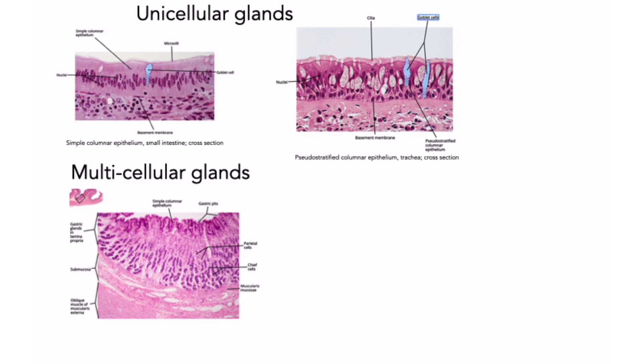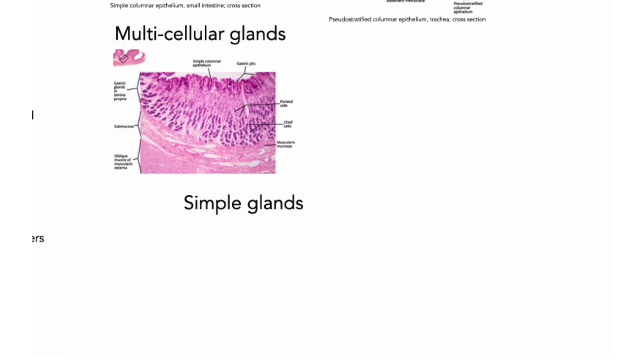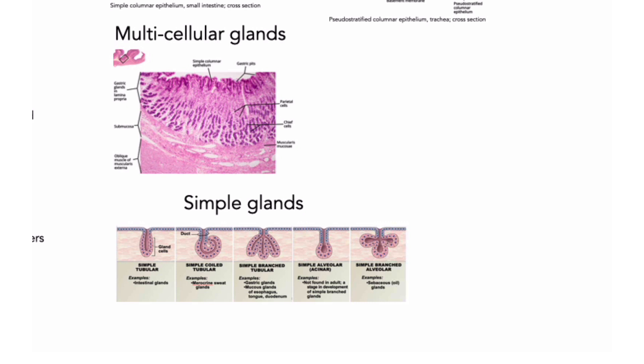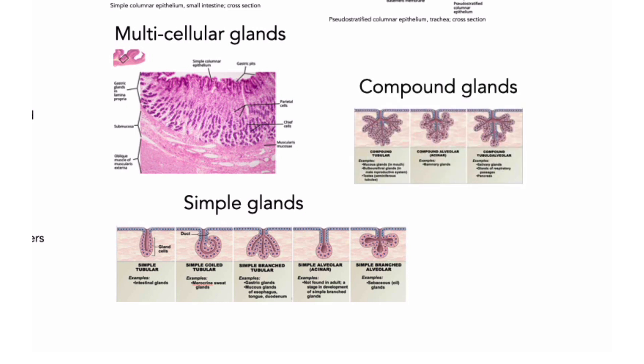Multicellular glands are further classified according to the branching pattern of the duct and the shape and branching pattern of the secretory portion of the gland. Briefly, three characteristics are useful in describing the structure of multicellular exocrine glands. One is the structure of the duct. A gland is simple if it has a single duct that does not divide on its way to the gland cells. The gland is compound if the duct divides one or more times on its way to the gland cells. Two, the shape of the secretory portion of the gland. Glands whose glandular cells form tubes are tubular. The tubes may be straight or they may be coiled. Those that form blind pockets or pouches are alveolar or acinar. Glands whose secretory cells form both tubes and pockets are tubulo-alveolar and or tubulo-acinar. Three, the relationship between the ducts and the glandular areas. A gland is branched if several secretory areas, tubular or acinar, share a duct. Branched refers to the glandular areas, not the duct itself.